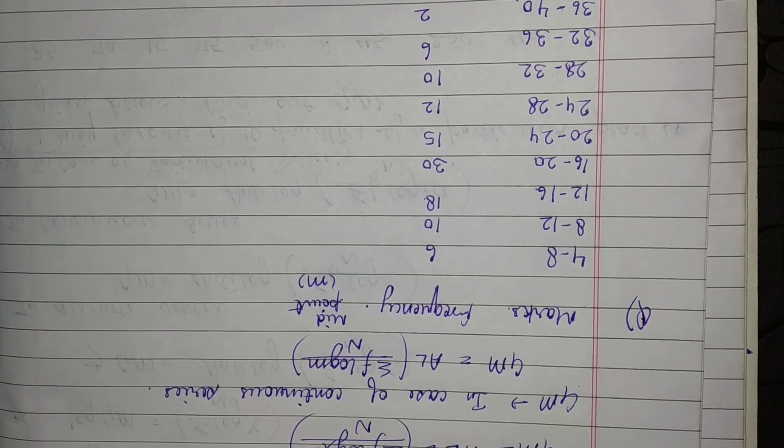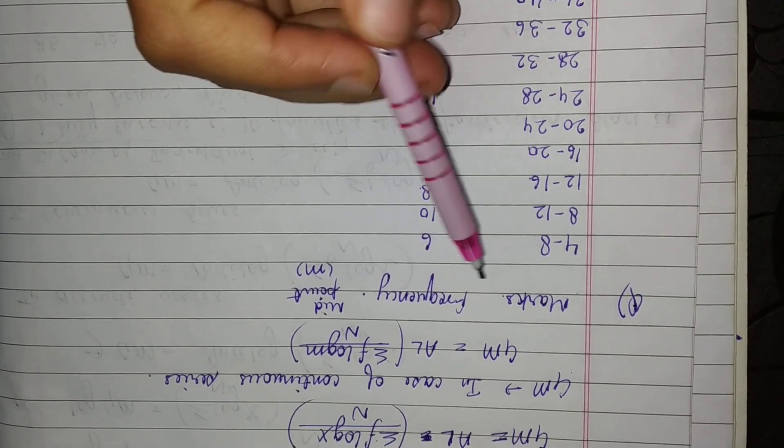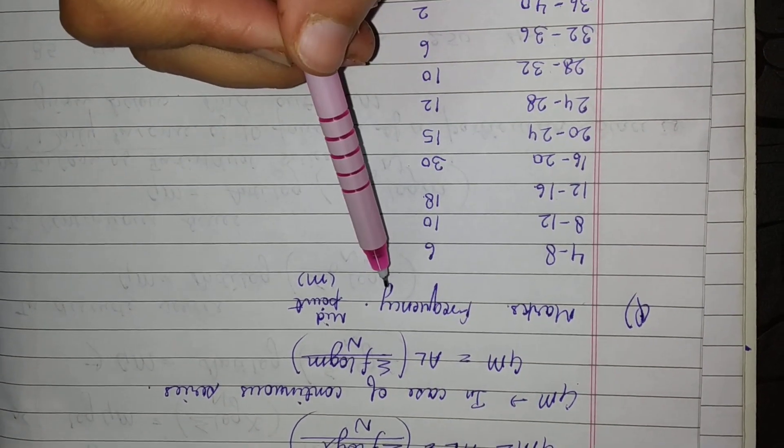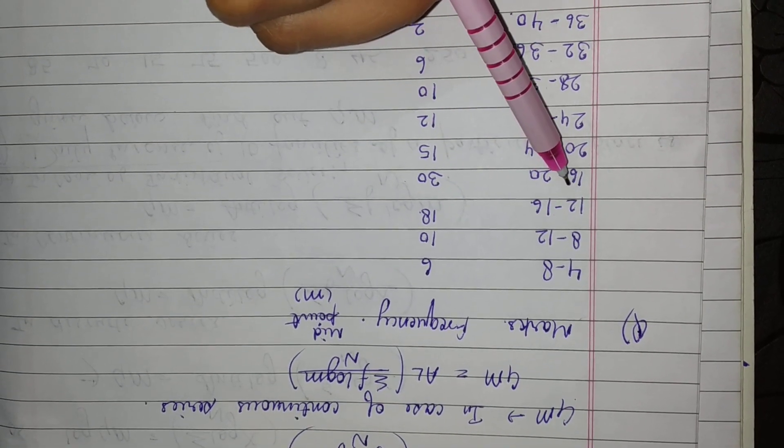From that range we find the midpoint. The question gives us marks ranges and frequencies: marks range 4 to 8, 8 to 12, 12 to 16, and so on. We can conclude that in all ranges the gap is consistent.